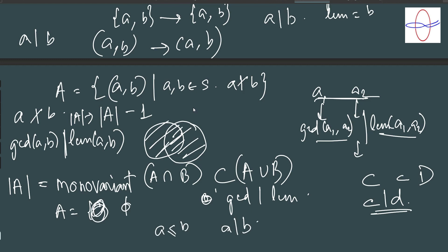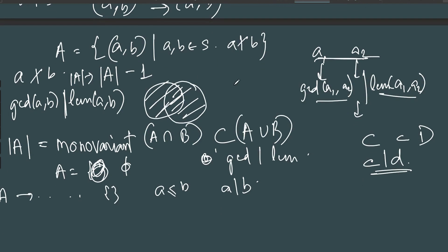So clearly, something fun is happening. We start with A, and it keeps getting smaller and smaller. But the thing is, we know that if this keeps happening, it will eventually become empty, because the set size is decreasing, and as soon as it becomes empty, it will be done. And the process will have to end. So we're done with this problem. Our monovariant was the size of this set A.